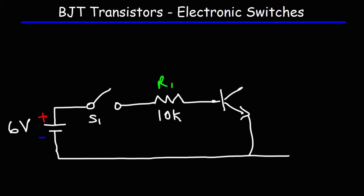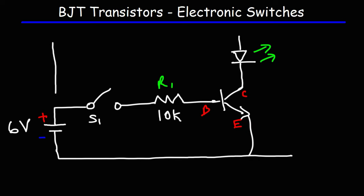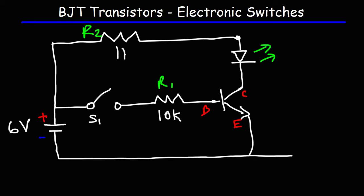We're going to connect R1 to the base of the transistor. So here we have the base, the collector, and the emitter. Then we're going to attach a resistor — actually, first let's put a light emitting diode, and we're going to use a green light emitting diode. Then let's add a resistor here, which we'll call R2. R2 we're going to give a value of 1k, or 1 kilo-ohm.